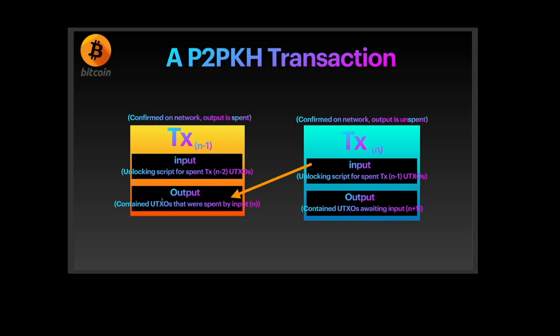Looking carefully at the diagram, on the left side you have transaction TX(n-1) where the output has already been spent and is confirmed on the network. The input of a transaction comes from the output of a previous transaction. The input has the unlocking script and the output has the locking script. TX(n-1) contains the unlocking script for the previously spent transaction TX(n-2), and its output has already been spent. On the right side, transaction TX(n) is confirmed on the network but its output is unspent, and the output specifies who the receiver of the UTXOs is.